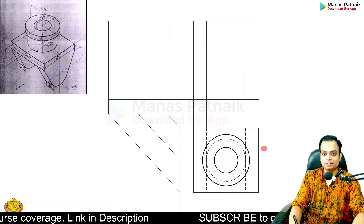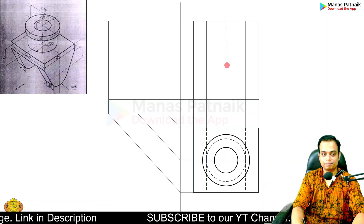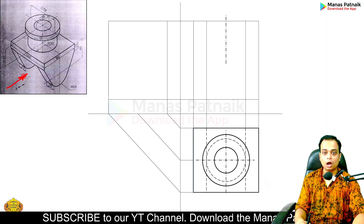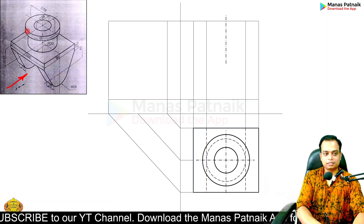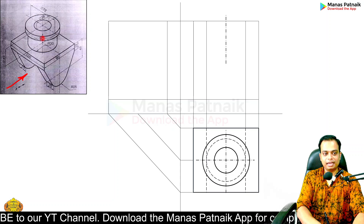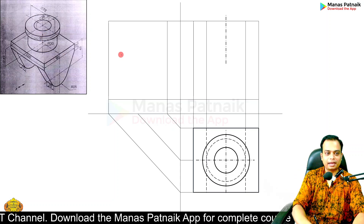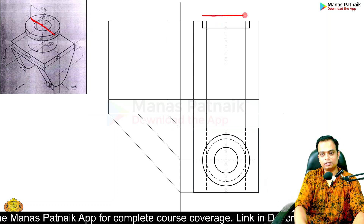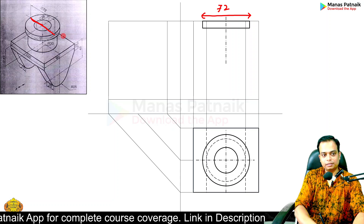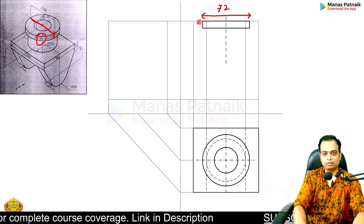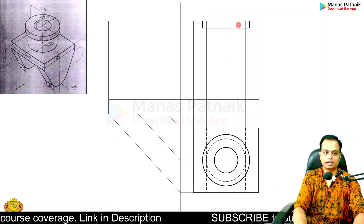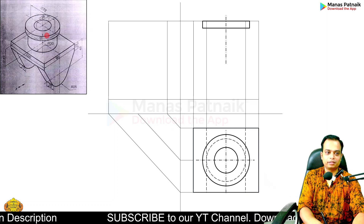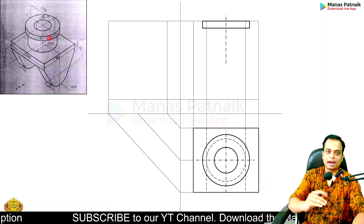Now for the front view. Making some reference lines — the center line is very important. From this location we are observing the object. The 10 mm thick strip looks like a rectangle with an overall length of 72 and a thickness of 10 millimeters.